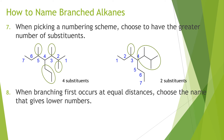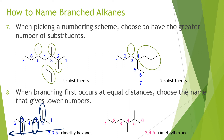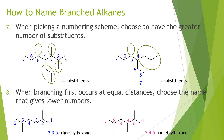When branching first occurs at equal distances from either end, choose the numbering that gives lower numbers overall. For example, the first substituent appears at carbon two no matter which direction you number, but the other substituent is closer to the right side, so we number right to left. This gives 2,3,5-trimethylhexane, whereas numbering the other way gives 2,4,5-trimethylhexane. Comparing the two sets of numbers, two and five are the same, but three is lower than four, so the first numbering scheme is correct.